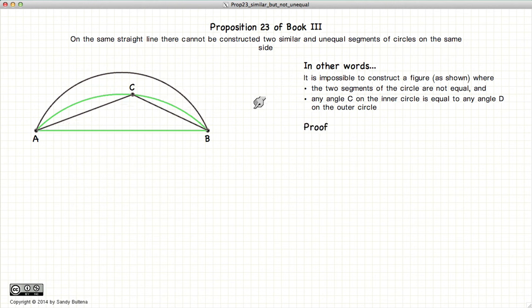So carrying on, extend the line AC to the point D. D being on the outer segment circle, and C being on the inner segment circle.